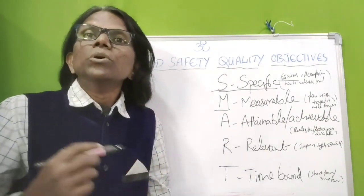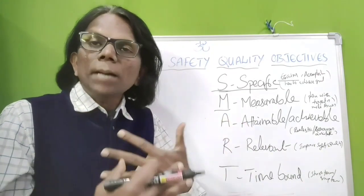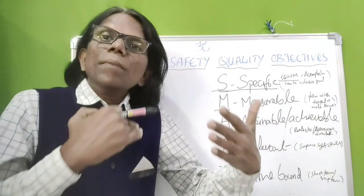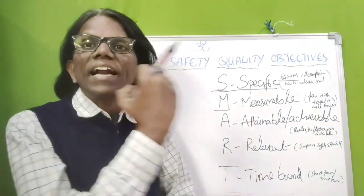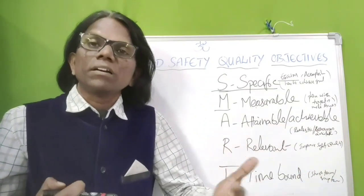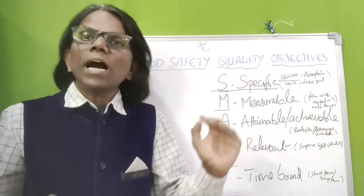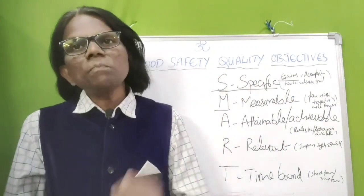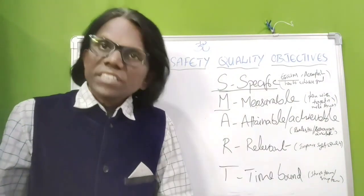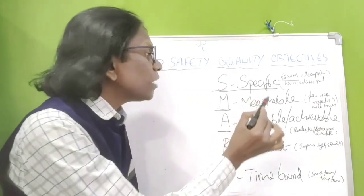We also have to identify and establish milestones to review the progress of the food safety and quality objective — whether we are gradually approaching the targeted goal or not. We review every quarter or monthly, and as per the GFSA system, we communicate the objective results to senior management.